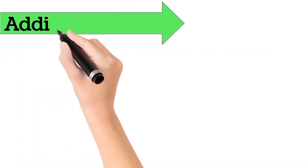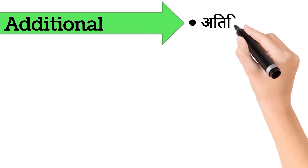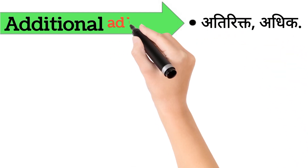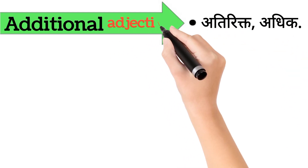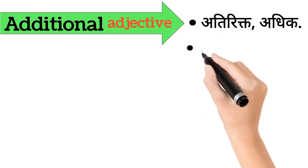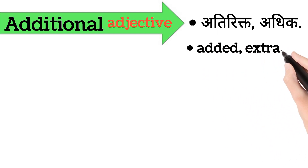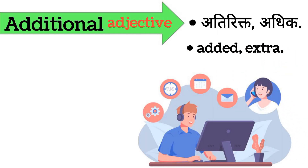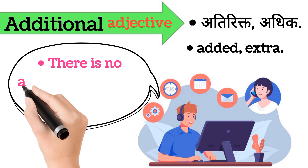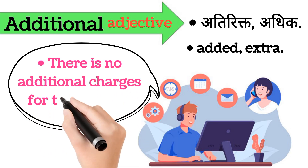Additional. Additional ka aarth hai atirikt, adhik. Additional word adjective form mein aata hai. It's also called added, extra. Iska example hai: there is no additional charges for this service.